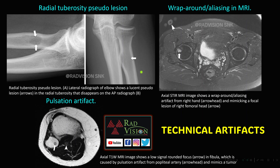Normal technical artifacts can also mimic lesions. A lucent lesion seen on a lateral elbow radiograph representing the radial tuberosity disappears on AP view — a pseudo-lesion. In MRI, wraparound or aliasing artifacts can mimic a focal lesion in the femoral head, and pulsation artifacts from the popliteal artery can mimic a lesion in the fibula. These are technical artifacts that should be recognized.